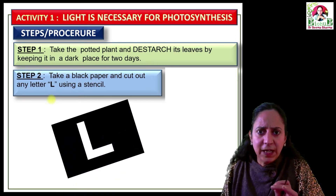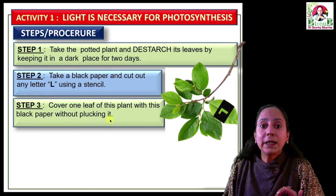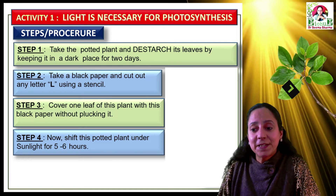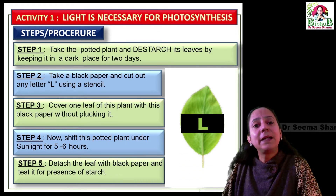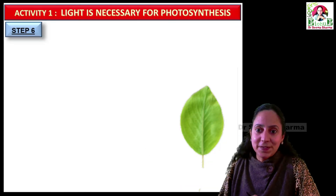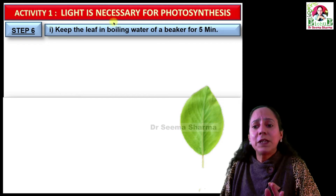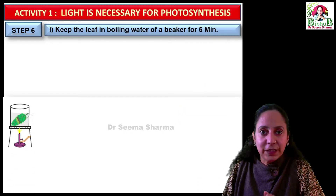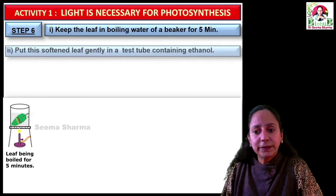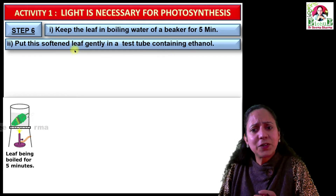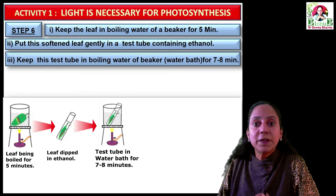Step two: take black paper and cut out any letter — in this activity we have cut out the letter L using a stencil. Step three: cover one leaf of this plant with this black paper without plucking it. Step four: shift this experimental setup into bright sunlight for five to six hours. Step five: detach this leaf with the black paper and test it for the presence of starch. Step six has five sub-steps. In sub-step one, keep the leaf in boiling water for five minutes. Then put this softened leaf gently in a test tube containing ethanol.